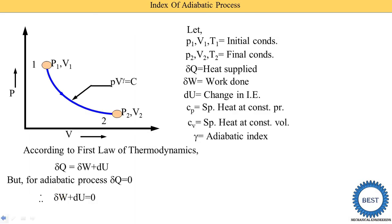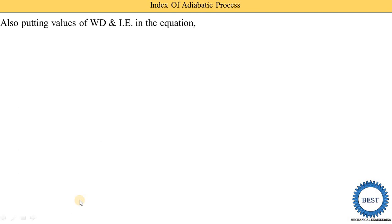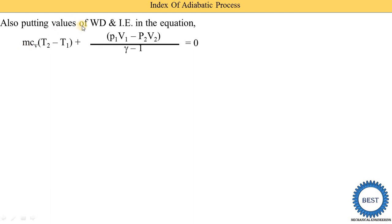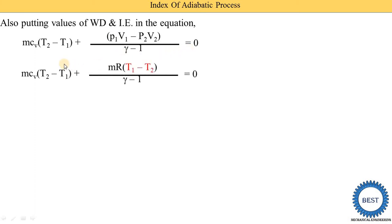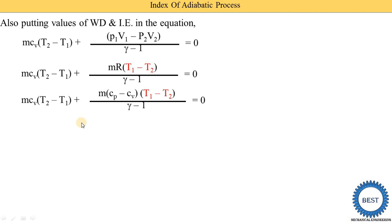In this equation we substitute the expressions for work done and internal energy. The equation for internal energy is M·Cv·(T2 − T1), and the equation for work done derived for the adiabatic process is (P1V1 − P2V2) upon (gamma − 1). So: M·Cv·(T2 − T1) plus (P1V1 − P2V2)/(gamma − 1) equals zero. Then, substituting P1V1 = MRT1 and P2V2 = MRT2, we take MR common, leaving (T1 − T2) in the bracket.